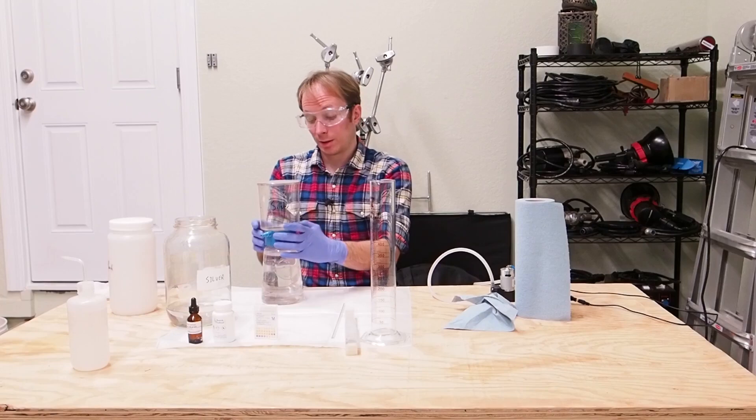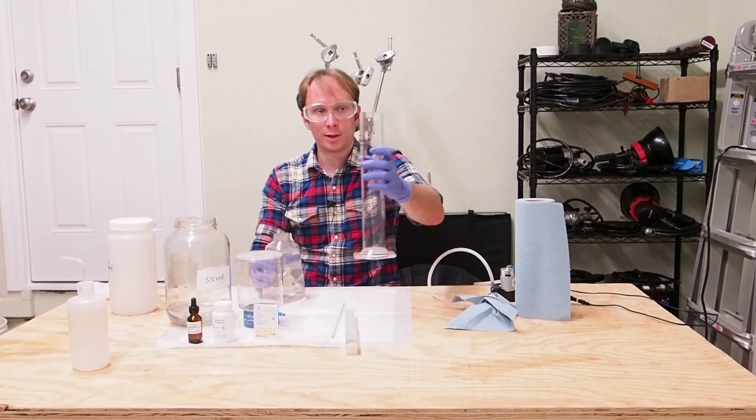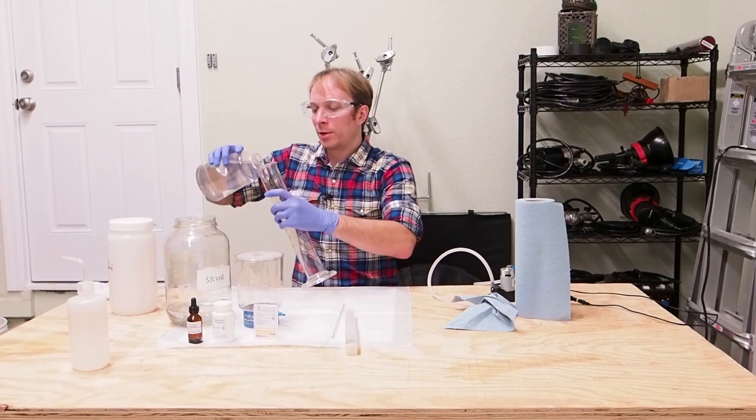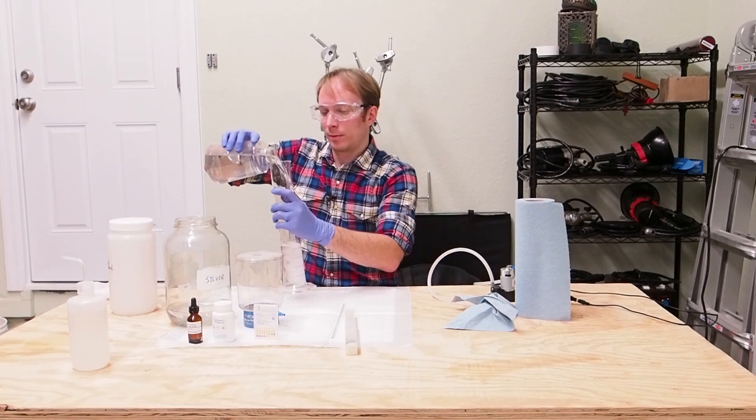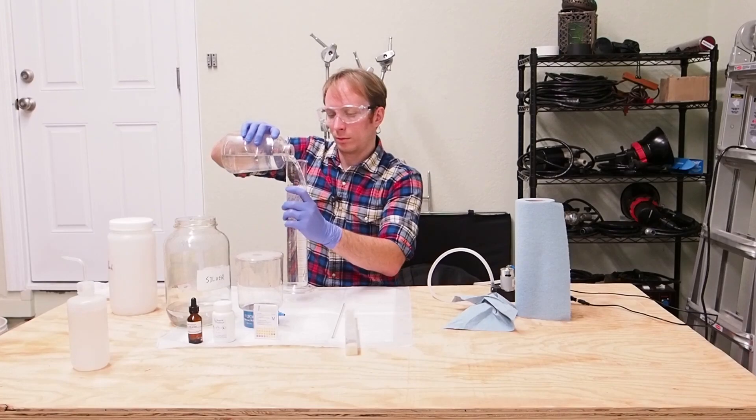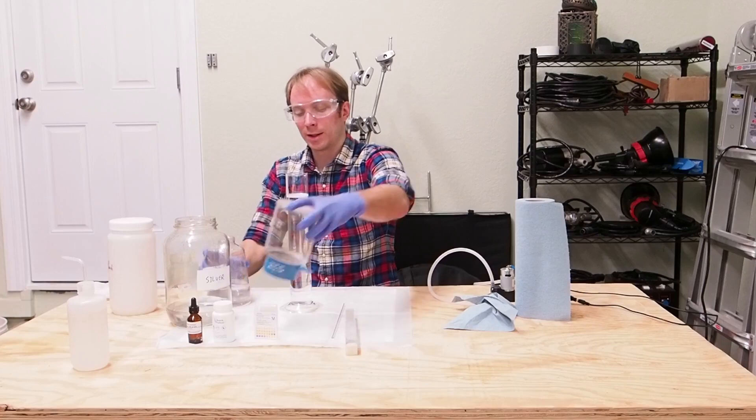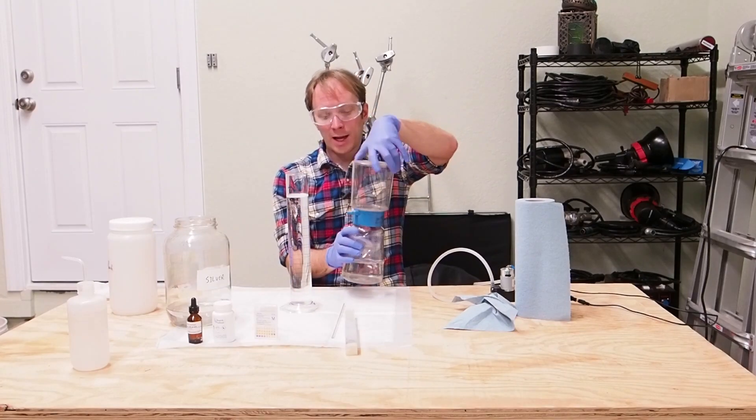So, the next step is to take the silver bath and put it into a graduated cylinder. I'm using my 500 milliliter cylinder here, because this is a pretty good volume of silver bath.